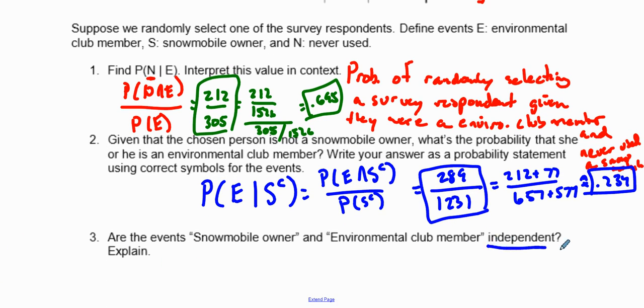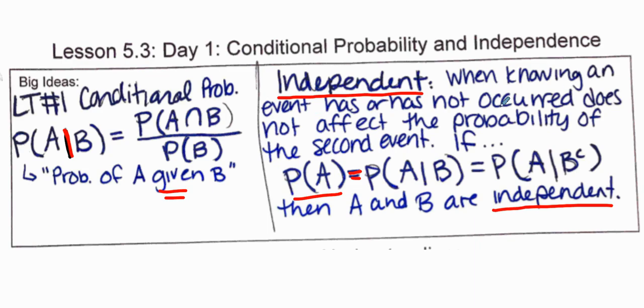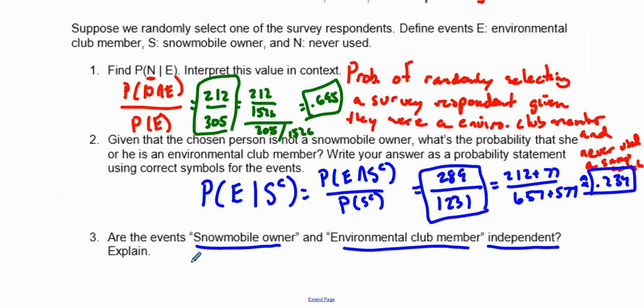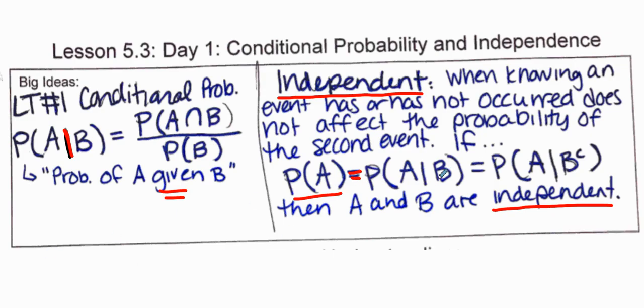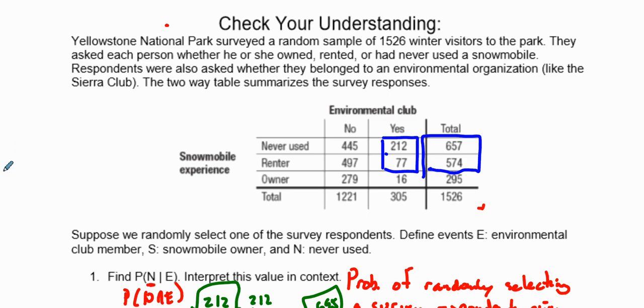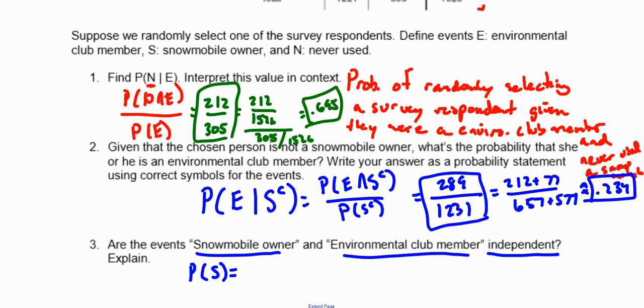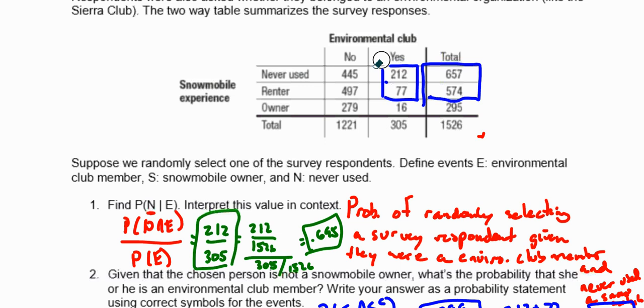Are the events snowmobile owner and environmental club member independent? Independence means when knowing an event has or has not occurred, does that affect the probability of a second event? The probability of being a snowmobile owner should equal P(S) no matter if you are an environmental club member or not.